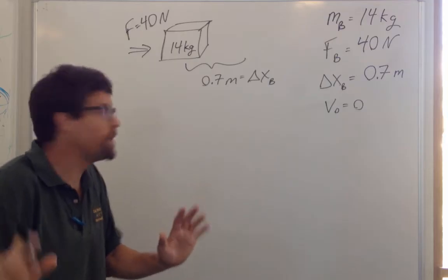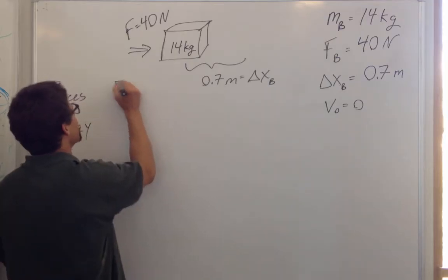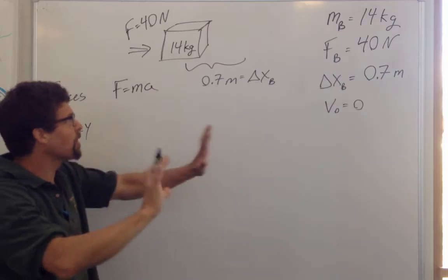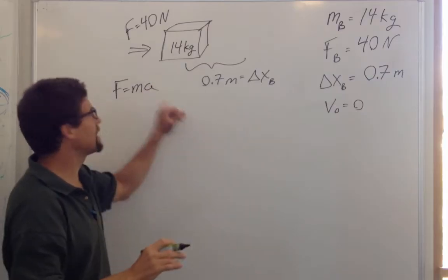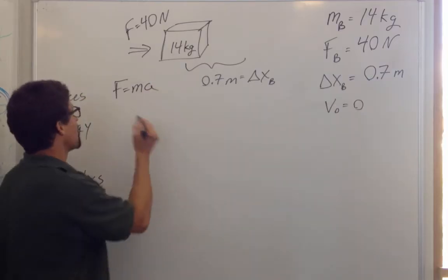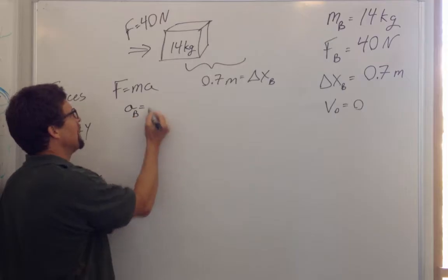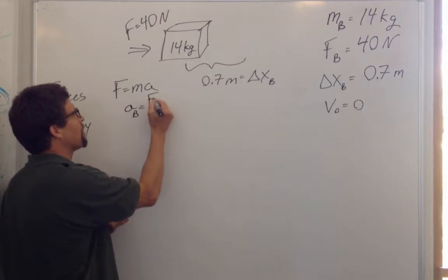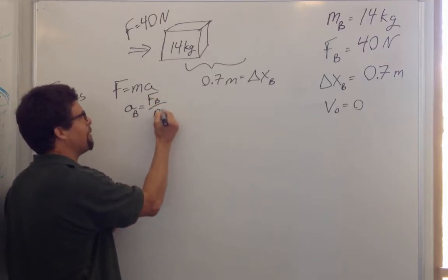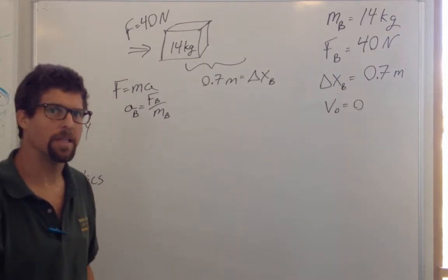For forces, we know F equals ma. So if I put a force on this mass, it's going to accelerate. The acceleration of the box is equal to the force on the box divided by the mass of the box.